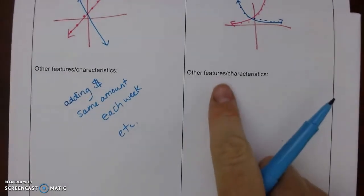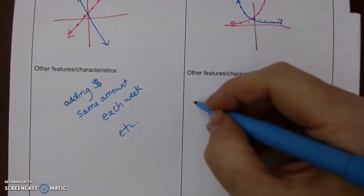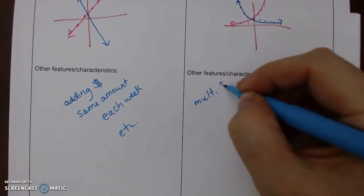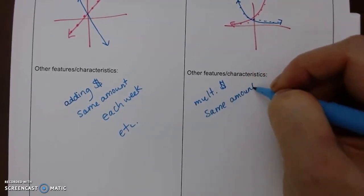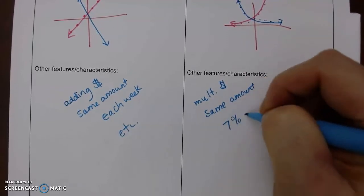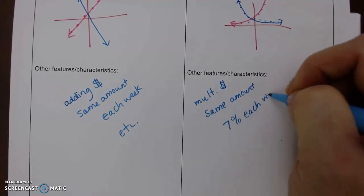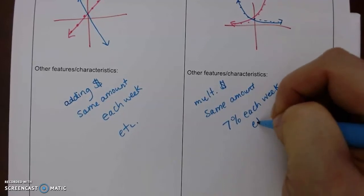Other things. This would imply that you are multiplying money by the same amount. So, like, it might be a percentage, like 7% each week.